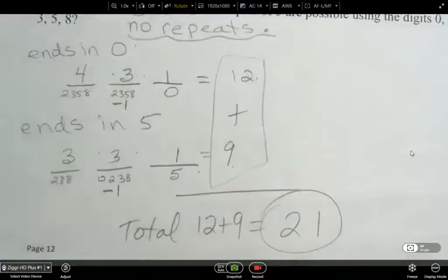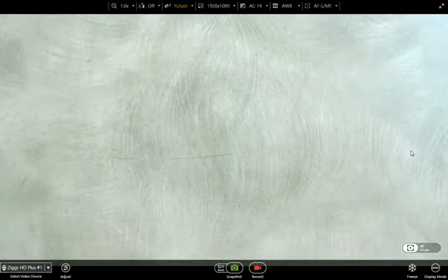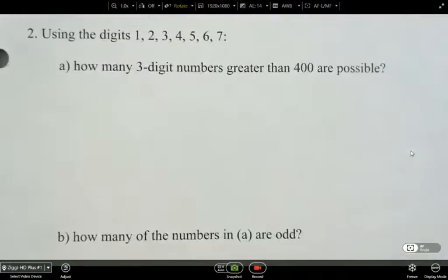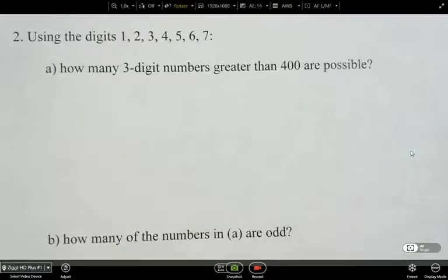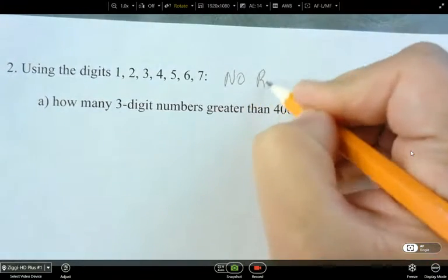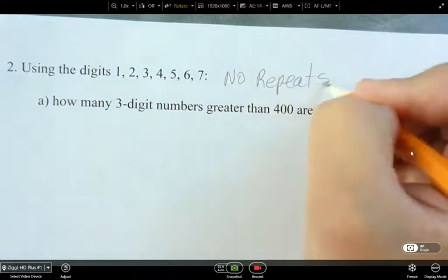Okay. Now, the next question. Same idea. It says, using the digits 1, 2, 3, 4, 5, 6, 7, how many three-digit numbers greater than 400 are possible? And I'm going to write this in again. No repeats.